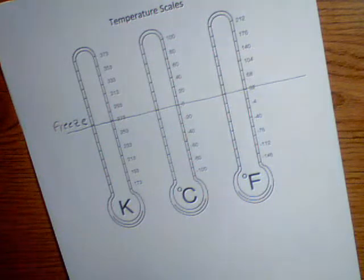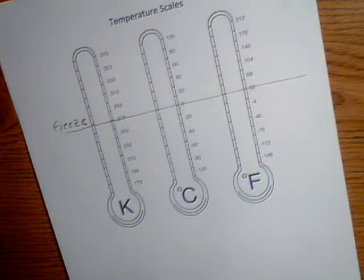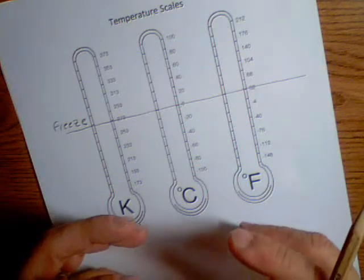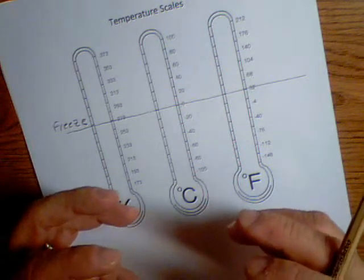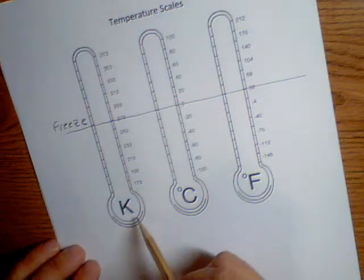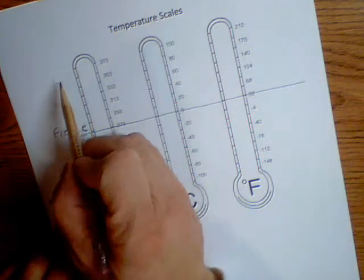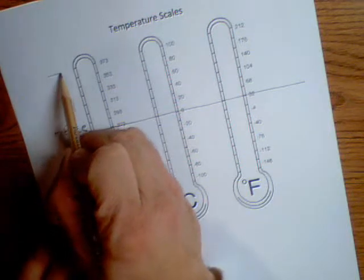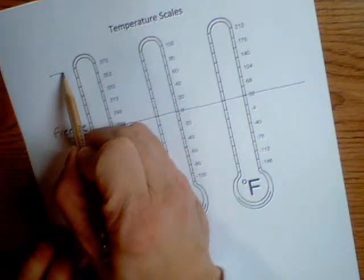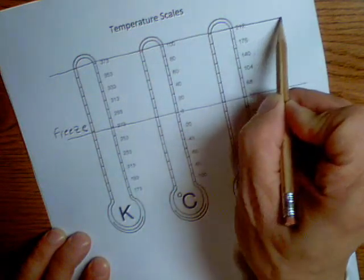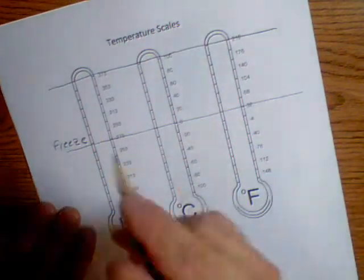When you measure something in centimeters, you have zero centimeters, you have 10 centimeters. Well, if you're measuring the rate at which particles are moving, you have to start zero with no movement — and that's Kelvin. That's why Kelvin is necessary. So we have 373 Kelvin, 100 degrees Celsius, and 212 degrees Fahrenheit, which is when water boils.